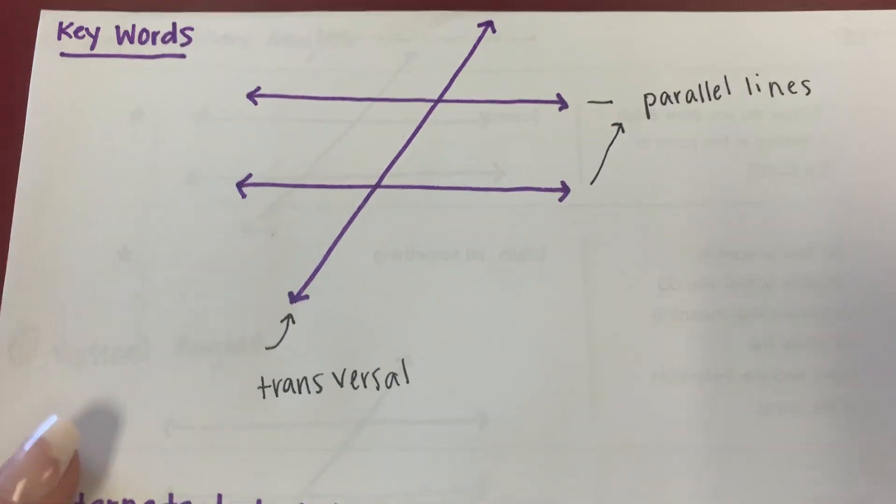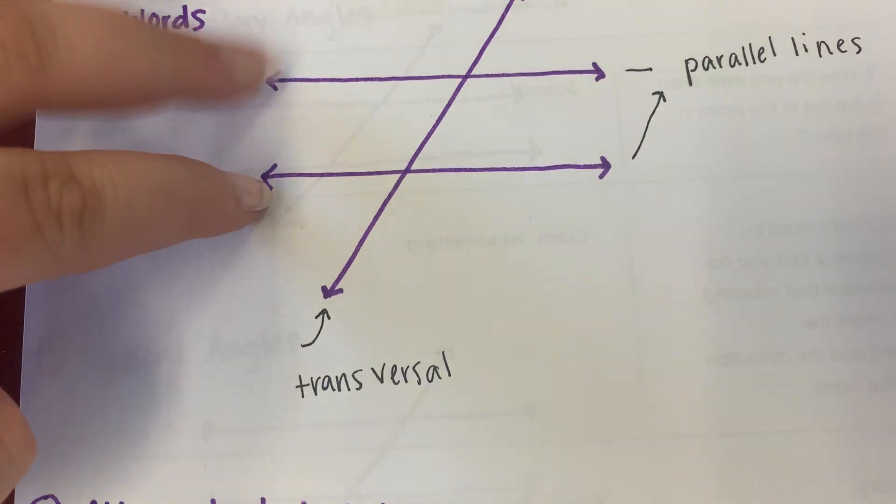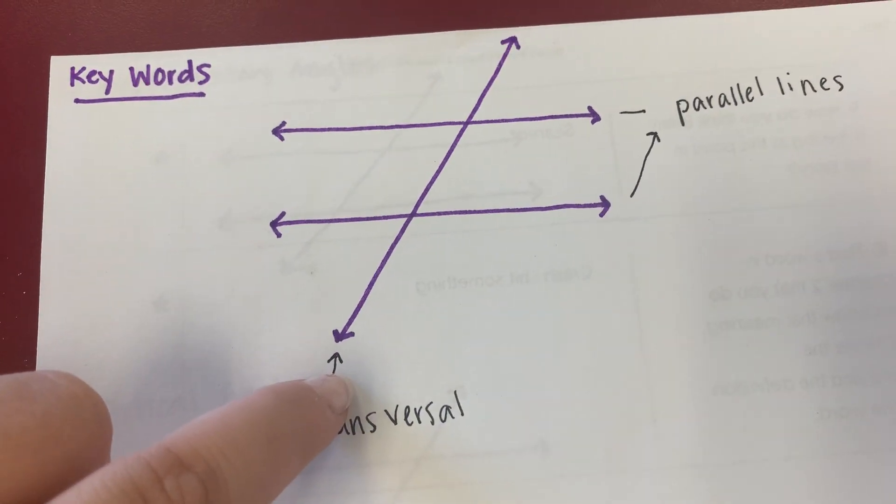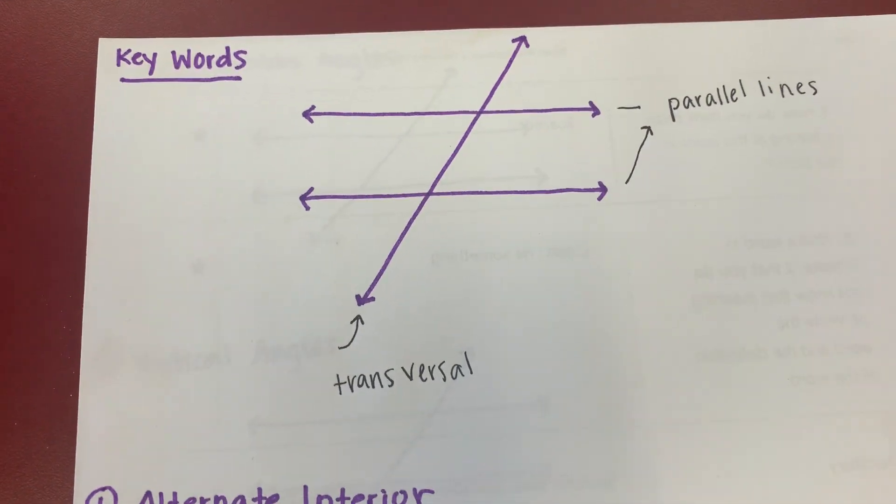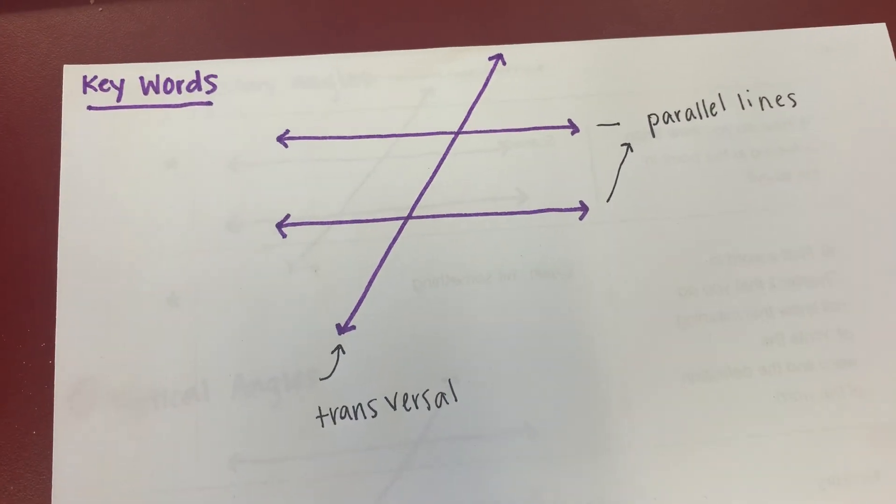So when you hear this, this is parallel lines cut by transversal. That's what this is called. That's what we're looking at. That's what the standard is going to call it. That's what the ESG is going to call it. Cut by transversal.